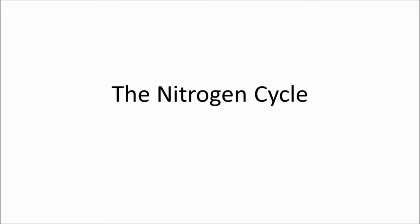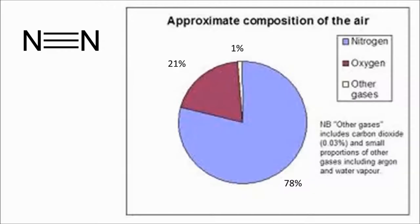Welcome to this video on the nitrogen cycle. An important thing to appreciate is that about 78% of our atmosphere is nitrogen. It exists as two nitrogen atoms stuck together by a strong triple covalent bond, so it's pretty unreactive — strongly bonded together.